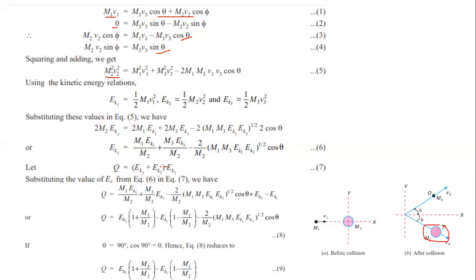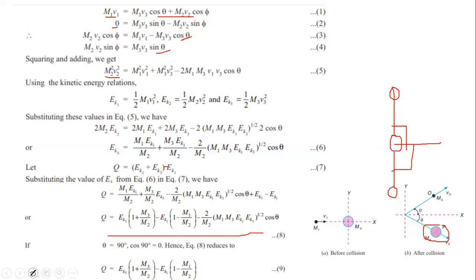Substituting the kinetic energy expressions, this is the Q-value equation for a nuclear reaction: Q = E2 + E3 minus E1, where E1, E2, and E3 are the kinetic energies of the incident particle, recoil nucleus, and emitted particle respectively.